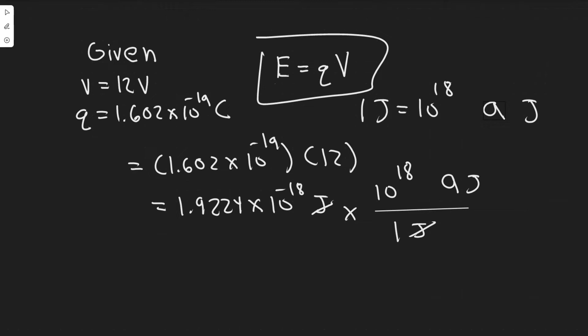So essentially, all we're going to have to do is plug in the charge Q and plug in the voltage V, and that's going to give us our energy. We're going to have to perform a unit conversion to get it into atto joules.